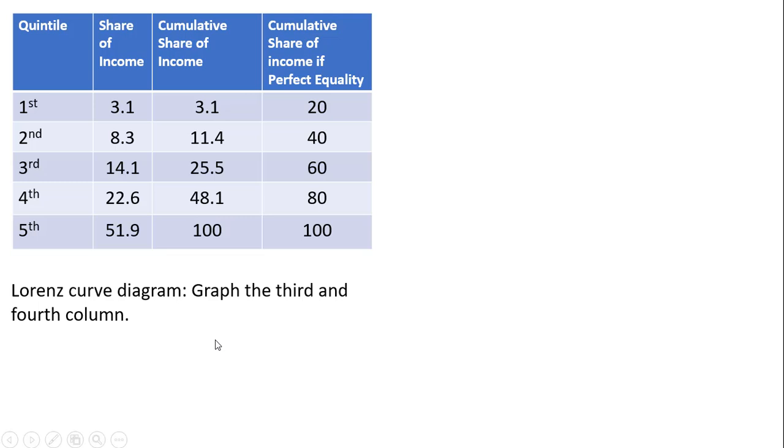What we're going to start doing now is taking this information in the table and graph our Lorenz curves. We're going to graph two curves, basically the third and fourth column.